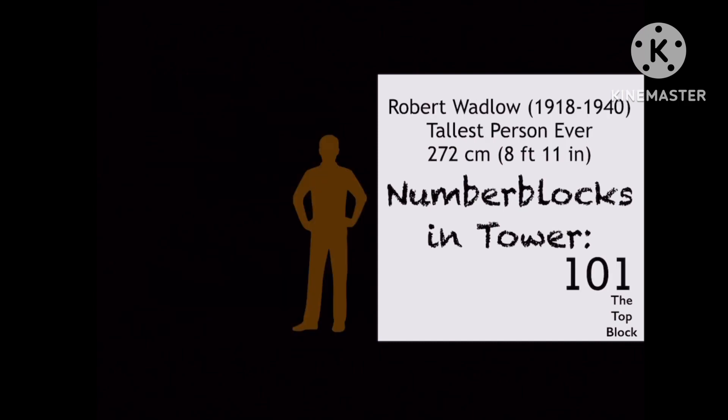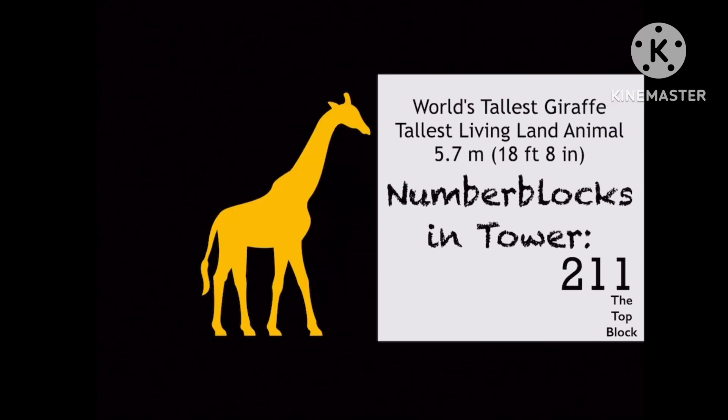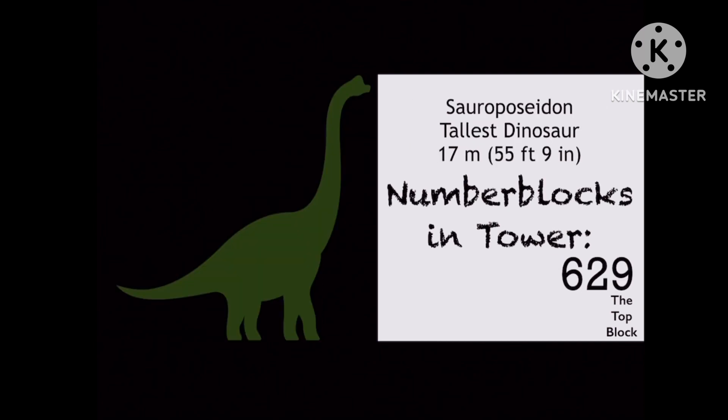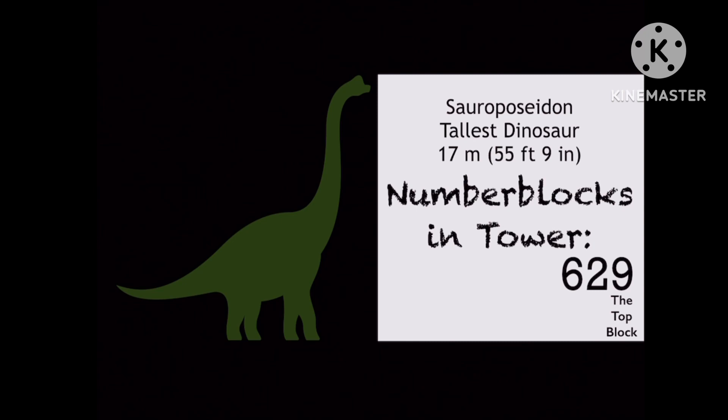The tallest person ever would have been the same height as a 101 block tower. The world's tallest giraffe would equal a 211 block tower. The tallest dinosaur would be equivalent to a 629 block tower. The largest blue whale on record was as long as 1,244 connected number blocks.